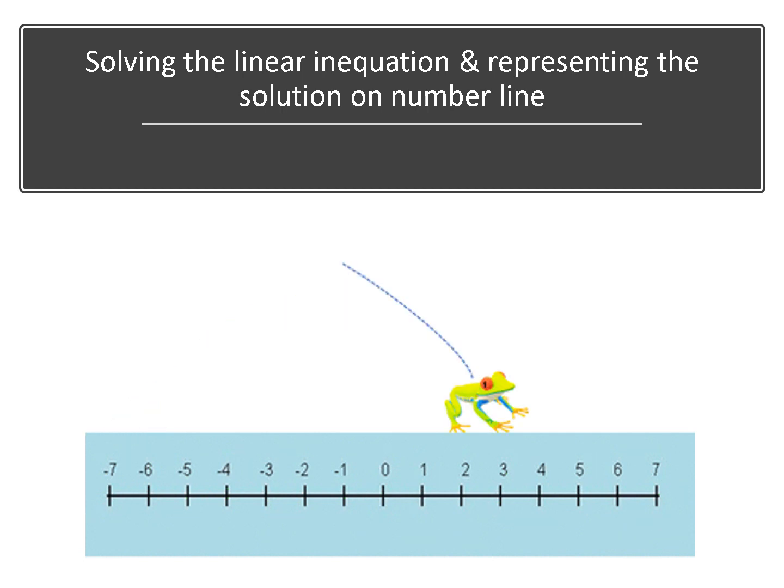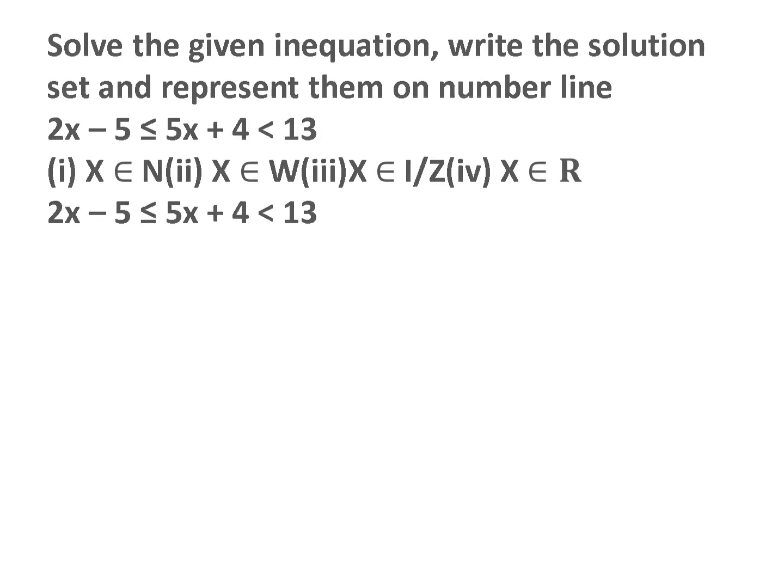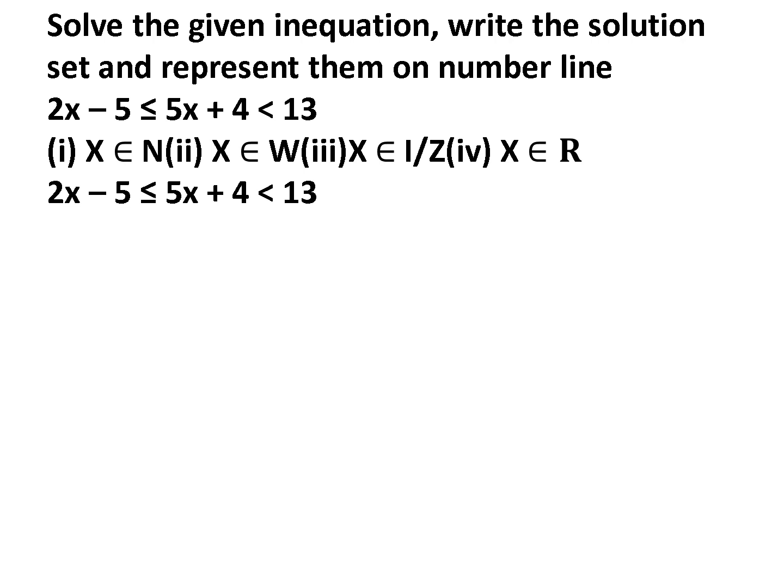Hello! Let's see how to solve a linear inequation and represent the solution on a number line. Solve the given inequation, write the solution set and represent them on the number line: 2x minus 5 less than or equal to 5x plus 4 less than 13. We will solve this inequation for: first, x belongs to N (natural numbers); second, x belongs to W (whole numbers); third, x belongs to I or Z (integers); fourth, x belongs to R (real numbers).